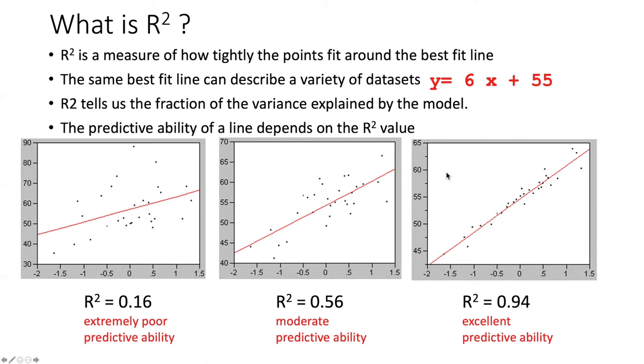All of these sets of points actually have the same best-fit line, y equals 6x plus 55. But the cloud of points looks quite different around each one of them. That is because in the graph to the left, there's a very loose or poor fit of the points around the line, whereas on the right, this is a very tight fit of the points around the line.